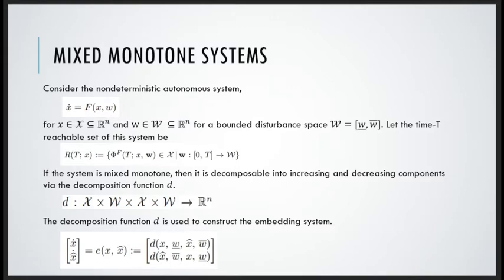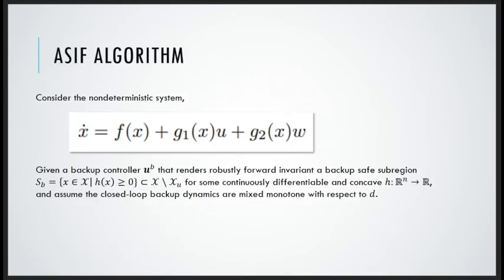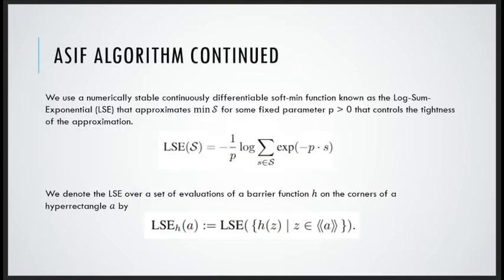Now for the main algorithm, we consider in general form the non-deterministic dynamical system shown. Given a backup controller UB that renders robustly forward invariant a safe backup sub-region SB for some continuously differentiable and concave H, and assume the closed loop backup dynamics are mixed monotone with respect to D. We use a numerically stable continuously differentiable soft min function known as the log sum exponential. It approximates min S for a set of points in the set S. So we denote the log sum exponential over a set of evaluations of a barrier function H on the corners of a hyper rectangle A by LSE_H of A.